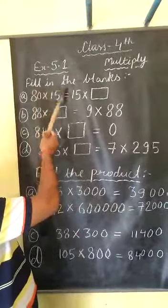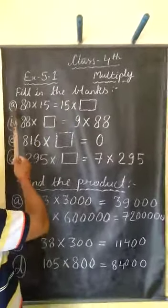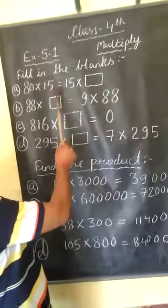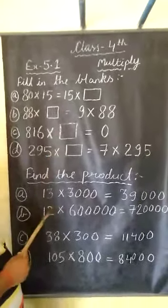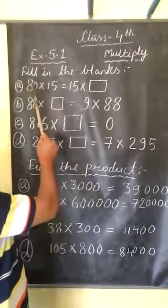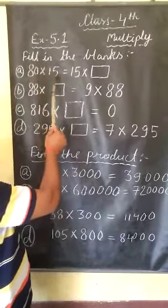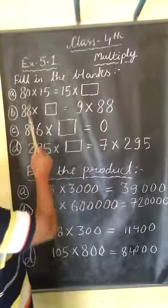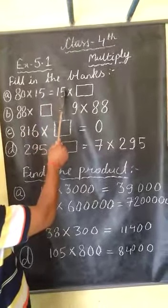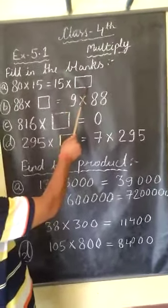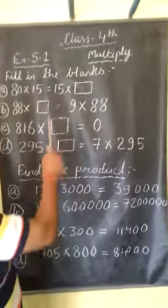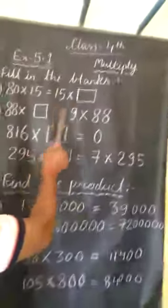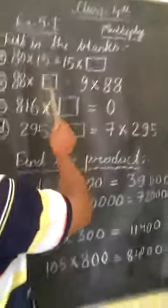First, we solve fill in the blanks. Question number 8: 80 into 15 equals blank into 80. Here we follow the first property — the commutative property of multiplication. If we change the order of numbers, the product will be the same. So we write 80 in the blank. 15 multiplied by 80 and 80 multiplied by 15 are equal in value.